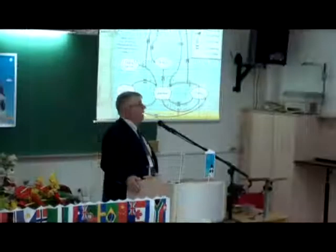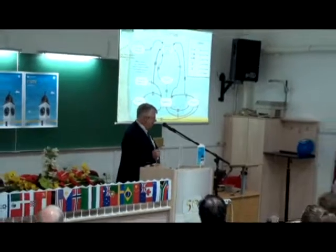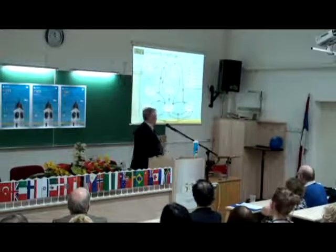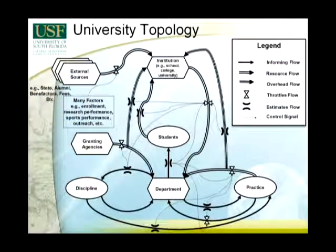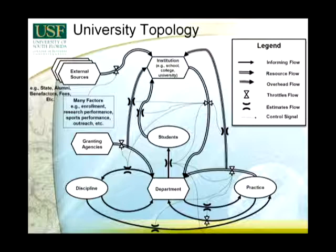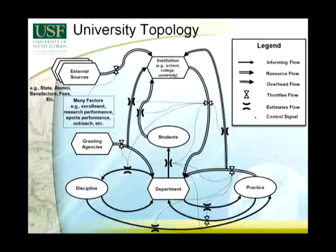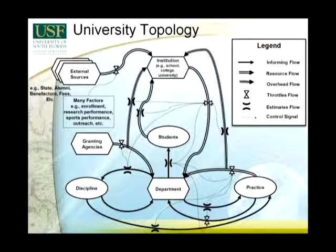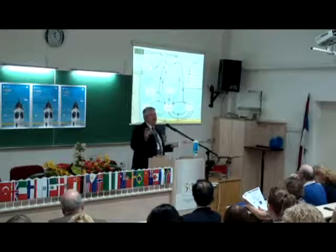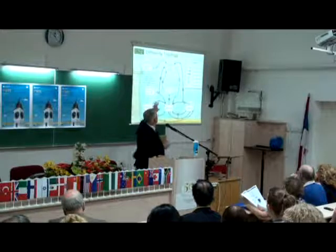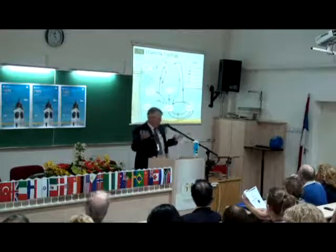In a recent book on the case method, I tried to chart out an example of a university topology. What I was interested in was not only the flow of informing — and I won't go into detail because as you describe real-world systems, it starts to look like a plate of spaghetti and about as easy to explain. But essentially, what you have is informing flows, which are the solid arrows, and resource flows, which are the hollow arrows, plus imperfect measurements of these flows that throttle your resources.